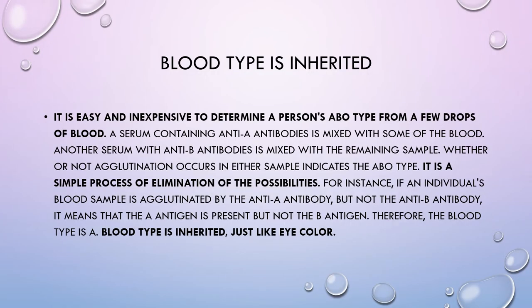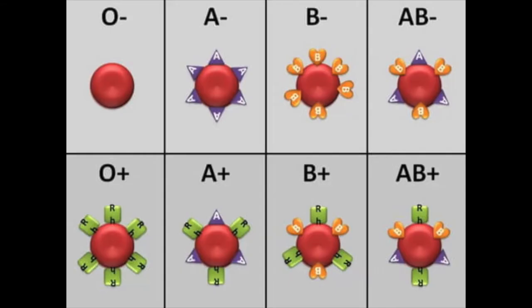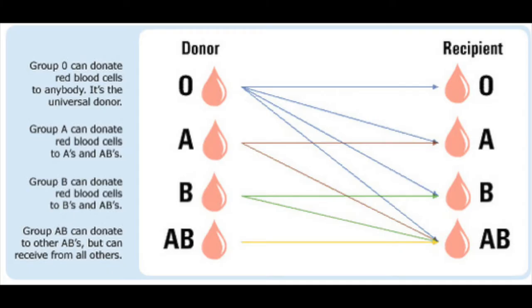It is easy and inexpensive to determine a person's ABO type from a few drops of blood. A serum containing anti-A antigens is mixed with some of the blood, and another serum of anti-B antigens is mixed with the remaining sample. Whether or not agglutination occurs in either sample indicates the ABO type — it is a simple process of elimination.